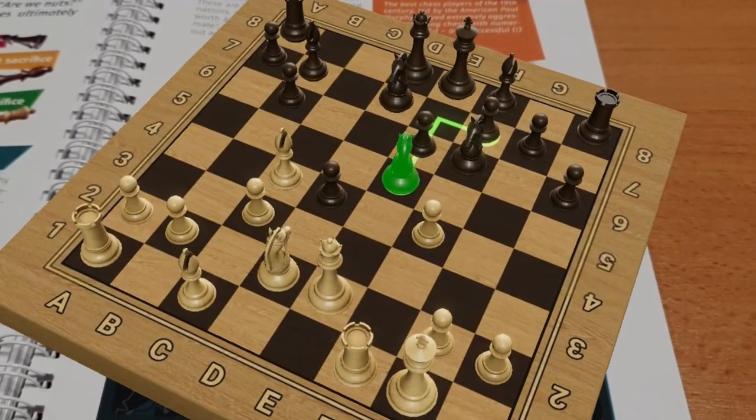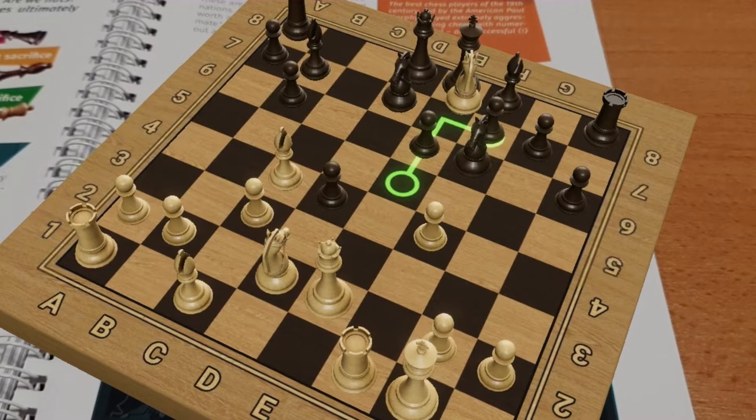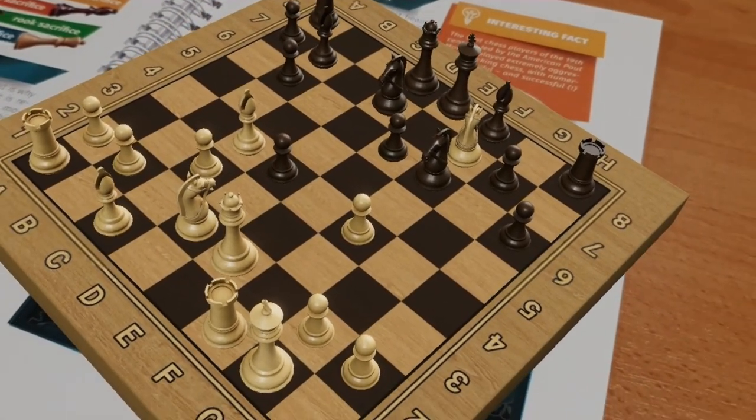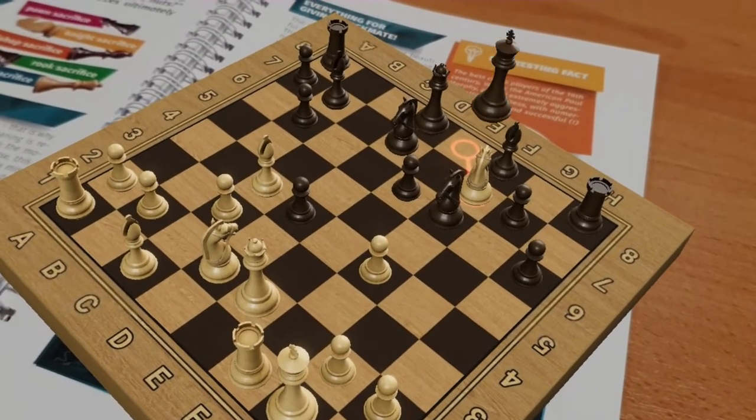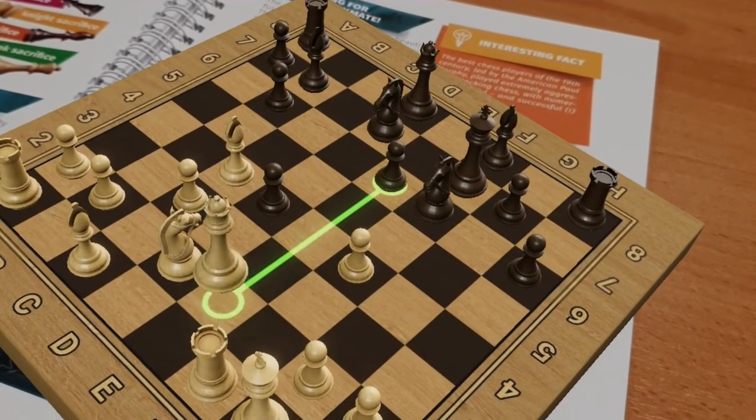White plays the knight takes f7 move, which is a knight sacrifice, but it destroys the only piece that defends the e6 pawn. After the king takes f7, the white queen forces the black king into a checkmate net beyond help.